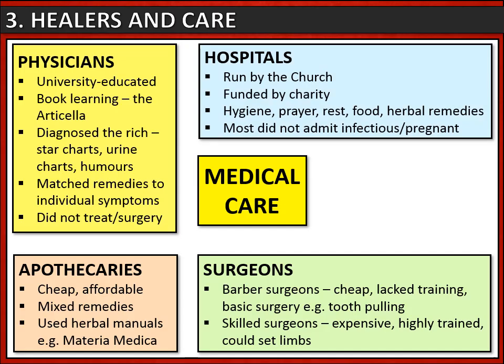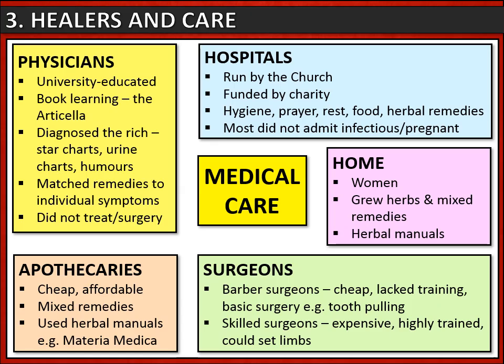There were hospitals too. These were run by the church and funded by charity, and they delivered hospitality rather than medical care. They were hygienic places where you might be treated by a nun or monk; treatment involved prayer, rest, food, and maybe herbal remedies, but no medical treatment. Most hospitals did not admit infectious patients or pregnant women. That meant for most ordinary people, treatment was carried out in the home, normally by women in the family. Women grew herbs often in their own gardens and mixed herbal remedies, and some had access to herbal manuals with a wide range of cures.